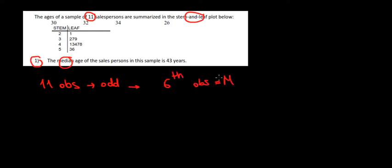To calculate that, we must look at the actual distribution, which we're going to take from the stem and leaf plot. We go first to the stem, then with the leaf — that gives us our first observation: 21.